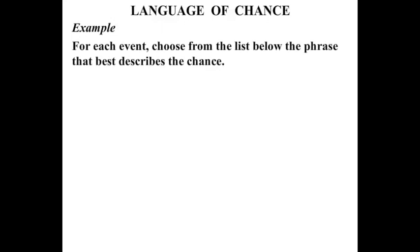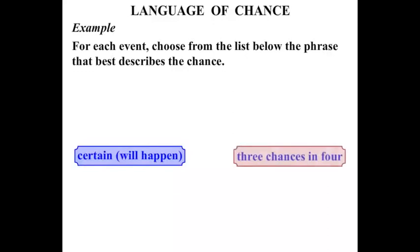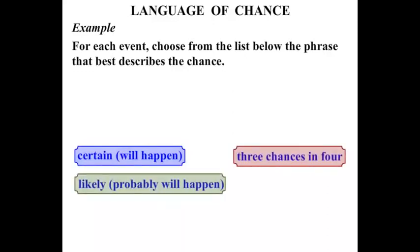For each event choose from the list below the phrase that best describes the chance. We are going to choose either certain which means it will happen, three chances in four, likely probably will happen.